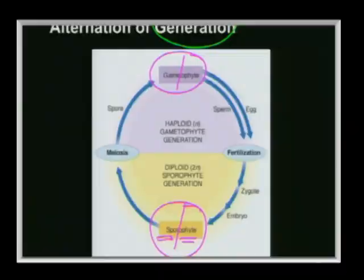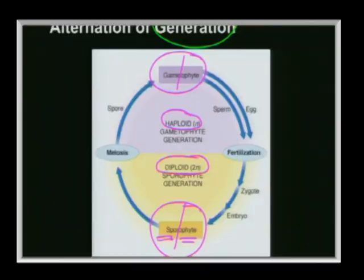Your gametophyte generation is always haploid while your sporophyte generation is always diploid. Haploid means there is one set of chromosomes (1n), and diploid means there are two sets of chromosomes (2n).